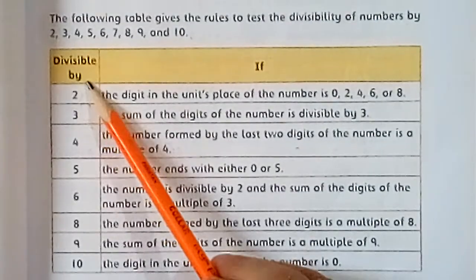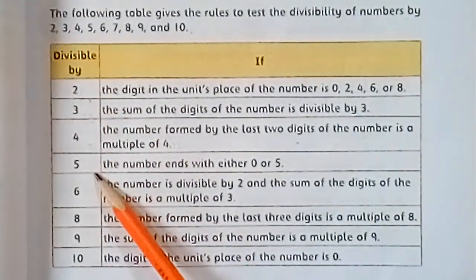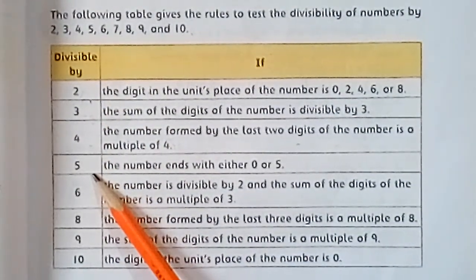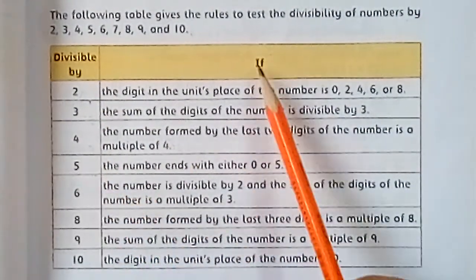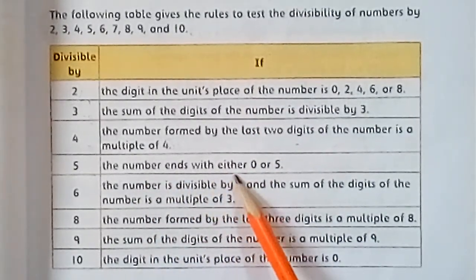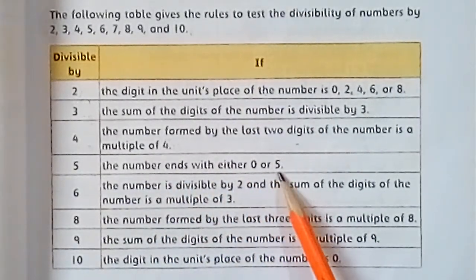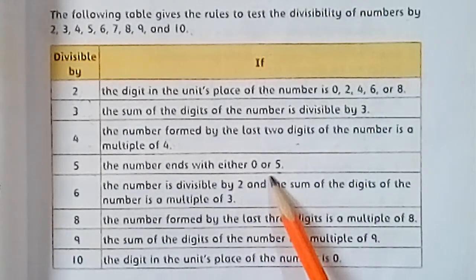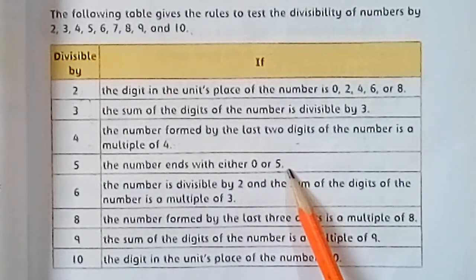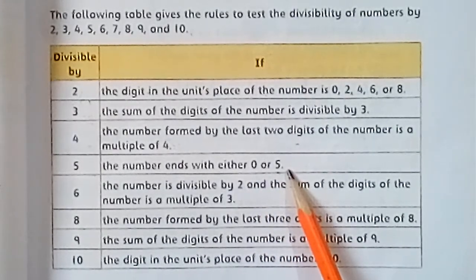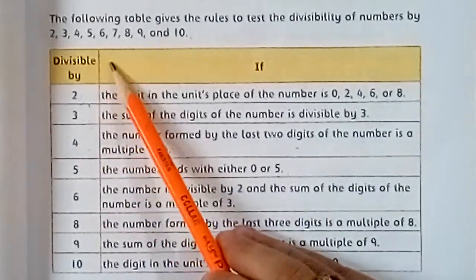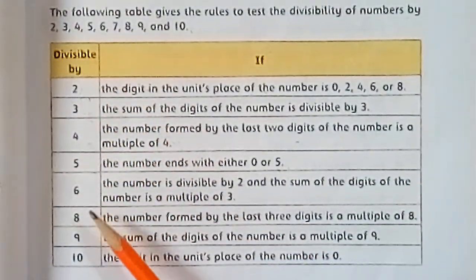The next one is divisible by 5. A number is divisible by 5 if the number ends with either 0 or 5. If the number ends with 0 or 5, the given number is divisible by 5.